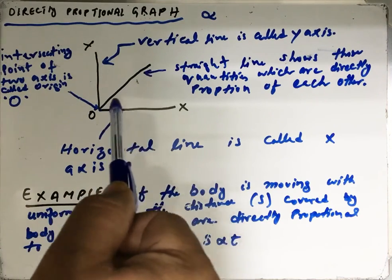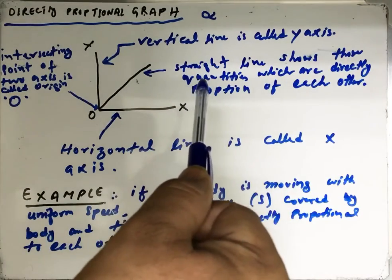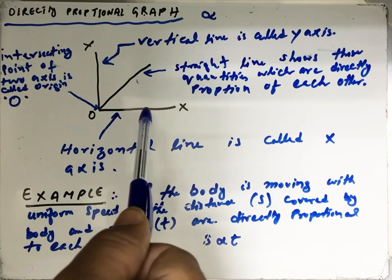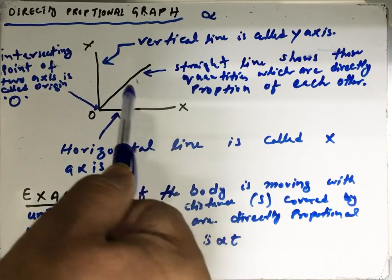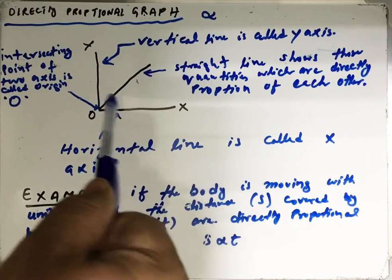So the straight line shows those quantities which are directly proportional to each other. This straight line shows quantities that are in direct proportion of each other.